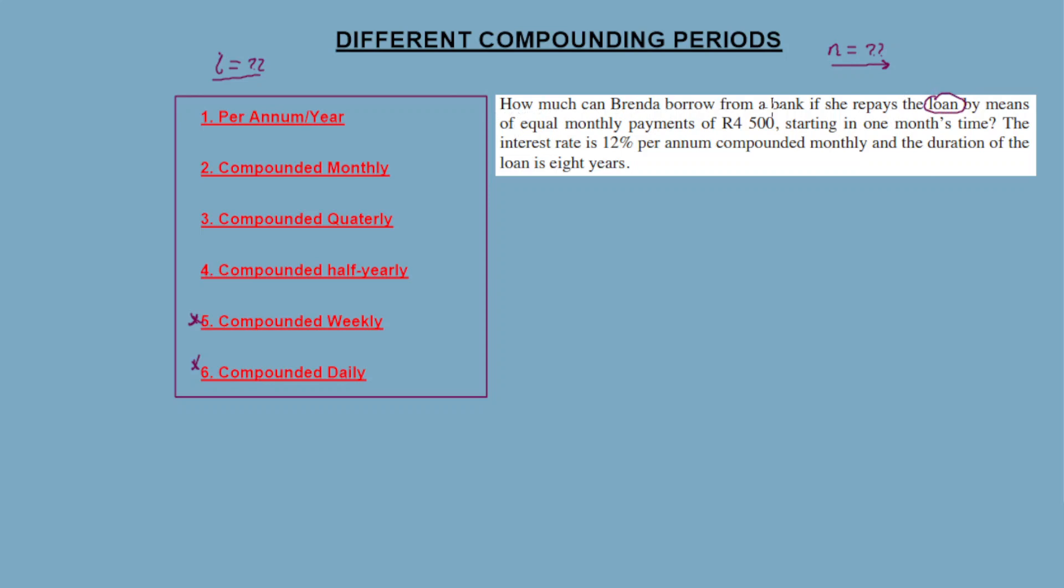How much can Brenda borrow from a bank if she repays the loan by means of equal monthly payments of R500, starting in one month's time? The interest rate, and this is the crucial part for this recording, is 12% per annum compounded monthly, and the duration of the loan is 8 years.